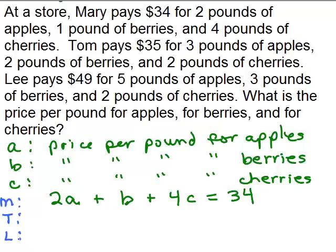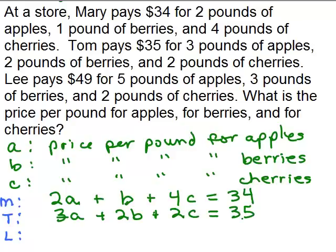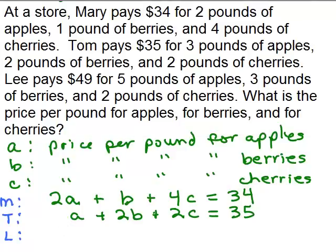Tom pays $35 for 3 pounds of apples, that would be 3A; 2 pounds of berries would be 2B; and 2 pounds of cherries would be 2C. And that was a total of $35 that Tom paid.